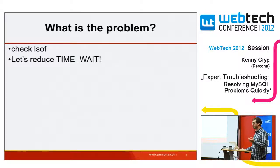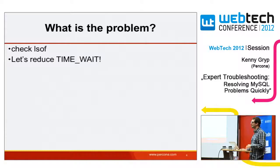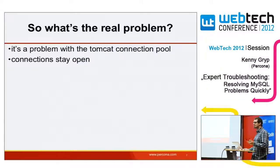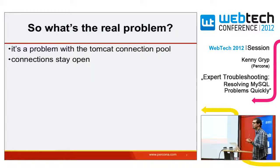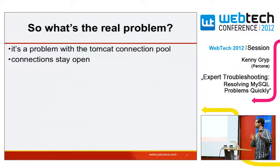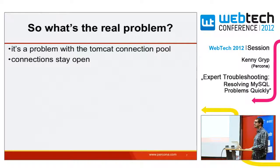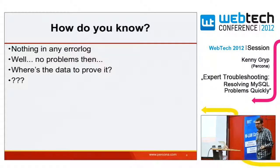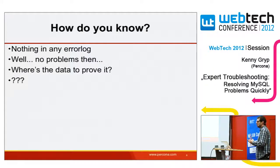I asked him what the real problem was. He said it was a problem with the Tomcat connection pool, and that the connections stay open. I asked how he knew that. He mentioned he couldn't see anything in the error log, so I didn't see a big problem there. He had no other information, so I kept asking, and he got a little annoyed, but I continued: what is the real problem? Why are you investigating this?